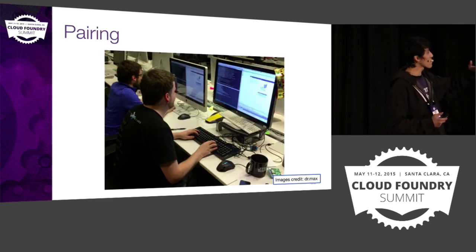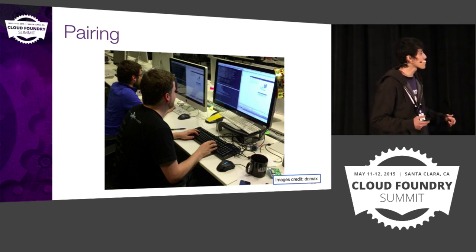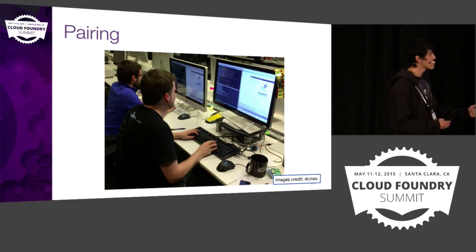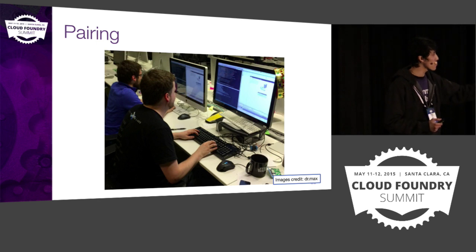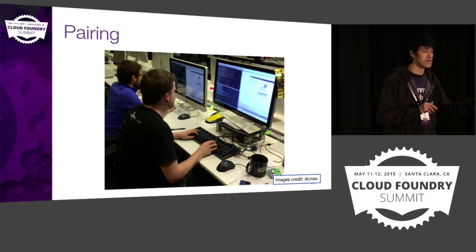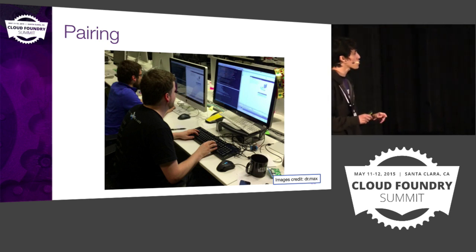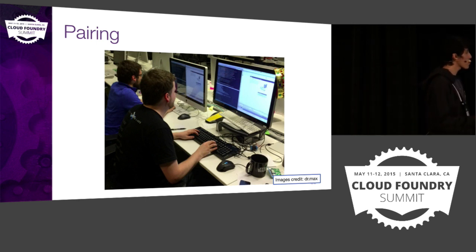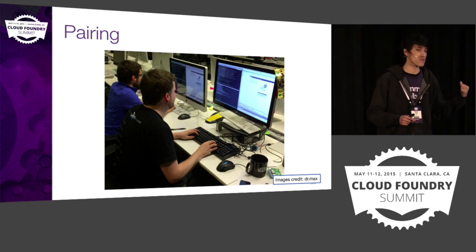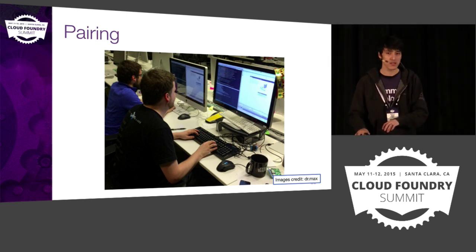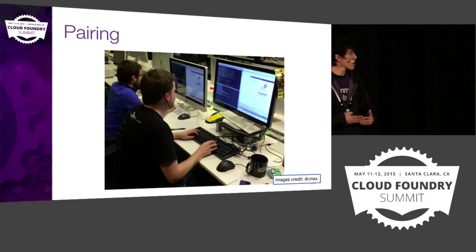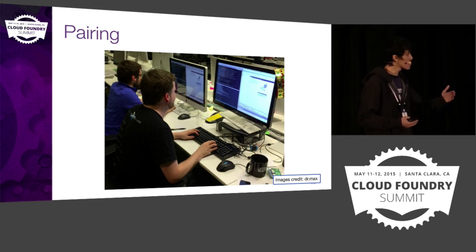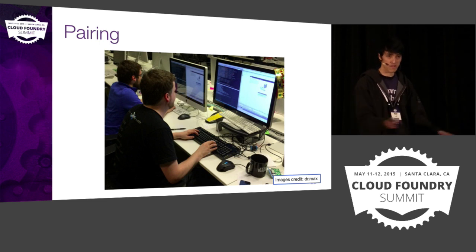Here's an actual picture of pairing happening. There are two persons looking at two monitors, but they're looking at the same content — it's actually one computer. Both have access to the keyboard and the mouse. Usually one is the driver and the other is the navigator. The driver types on the keyboard, coding and doing actual work, while the navigator observes, looking for potential issues or constraints. The navigator and driver swap roles every now and then so you don't get bored.